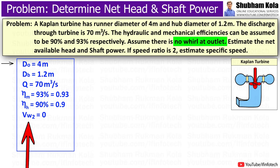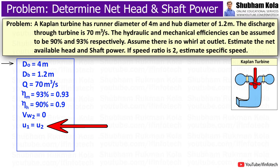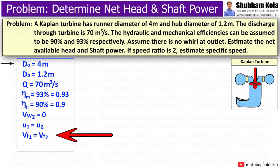The whirl velocity at outlet V_W2 will be 0. For a Kaplan turbine, the tangential velocity at inlet and outlet is the same, i.e. U1 equals U2, and the velocity of flow at inlet and outlet is the same, i.e. V_f1 equals V_f2.